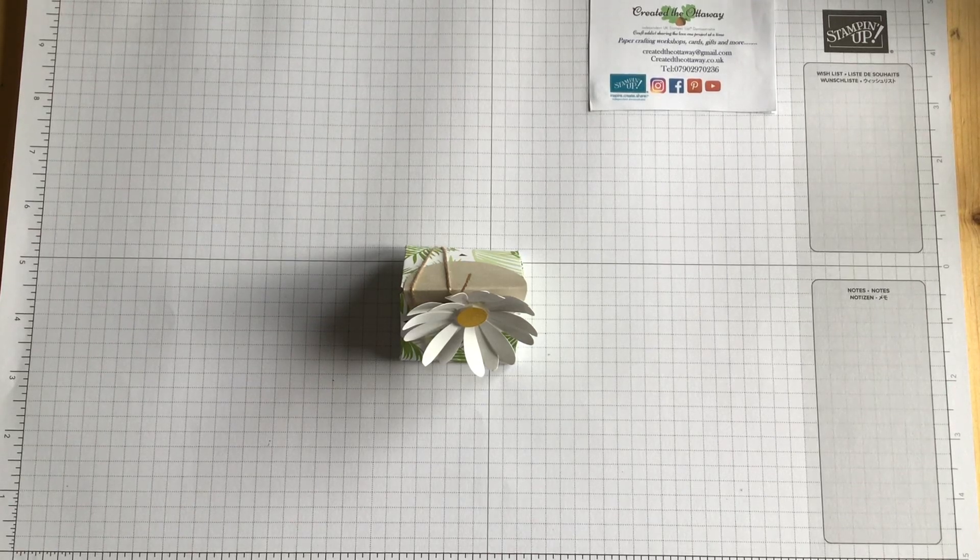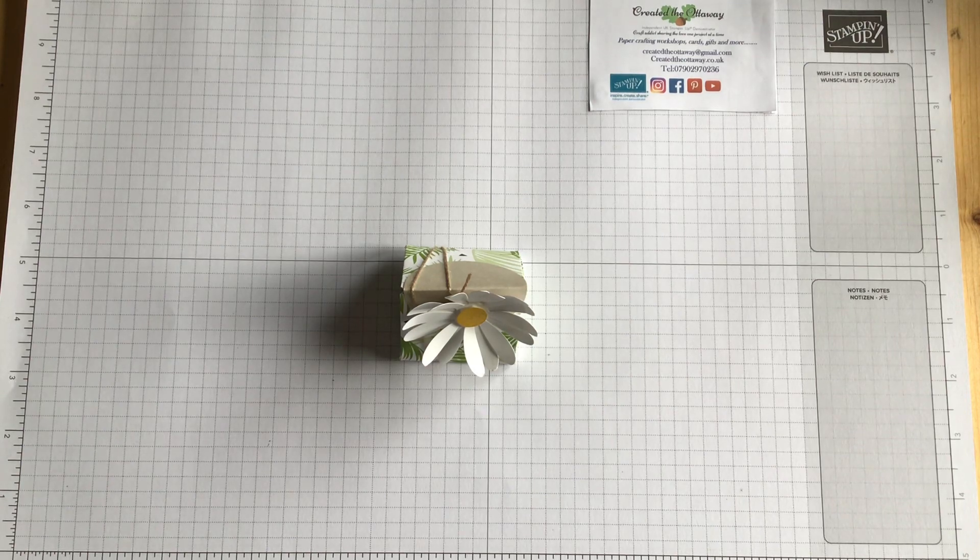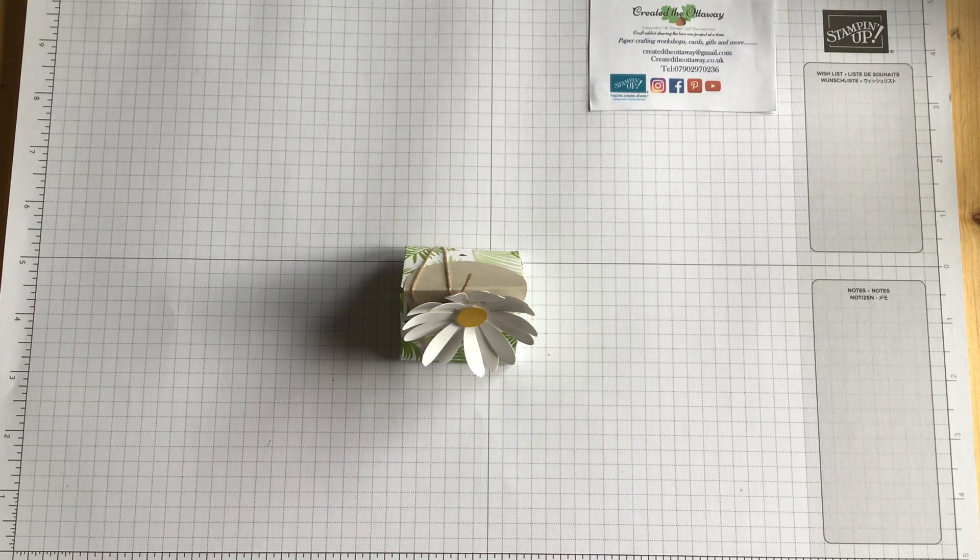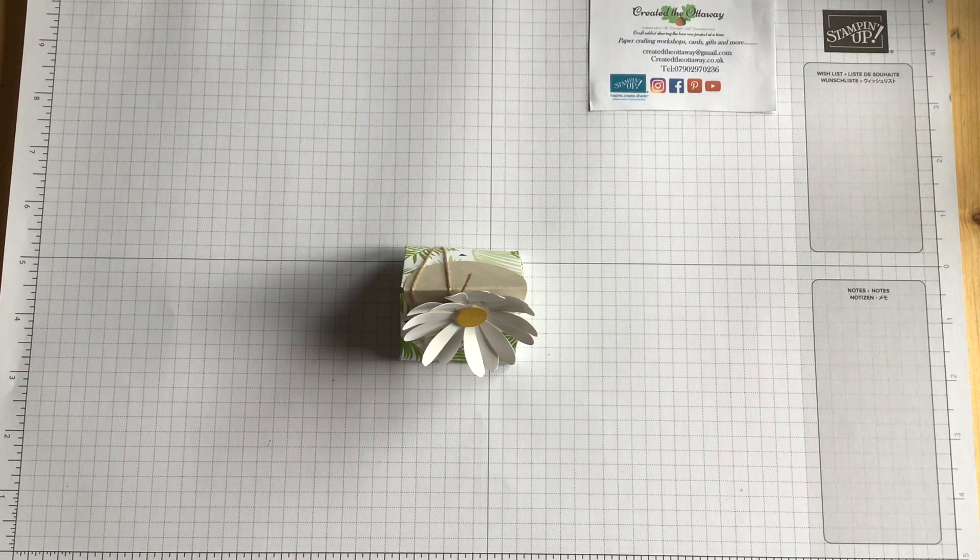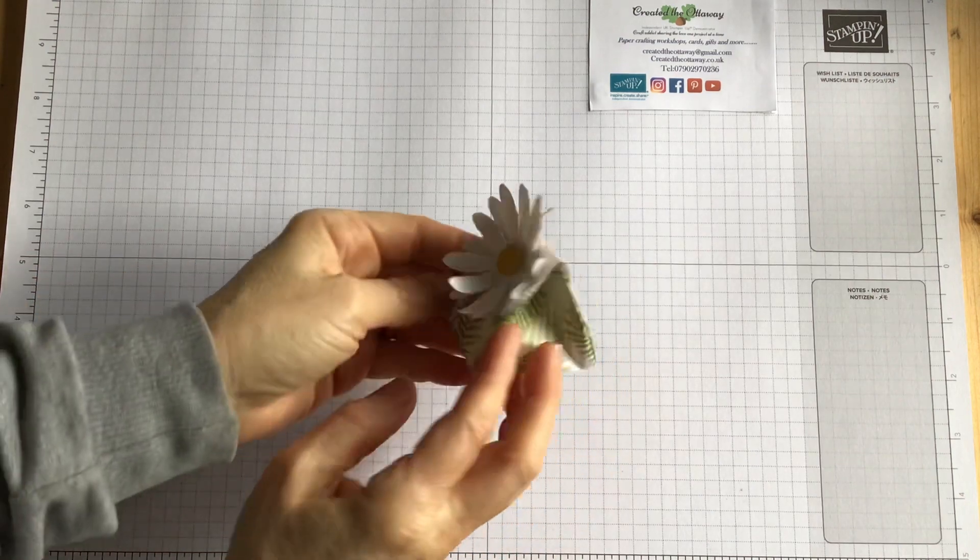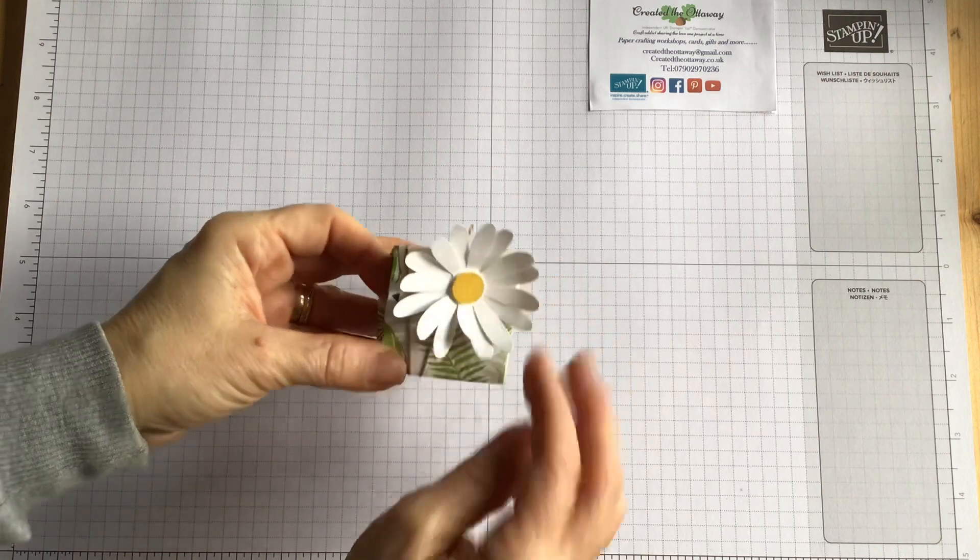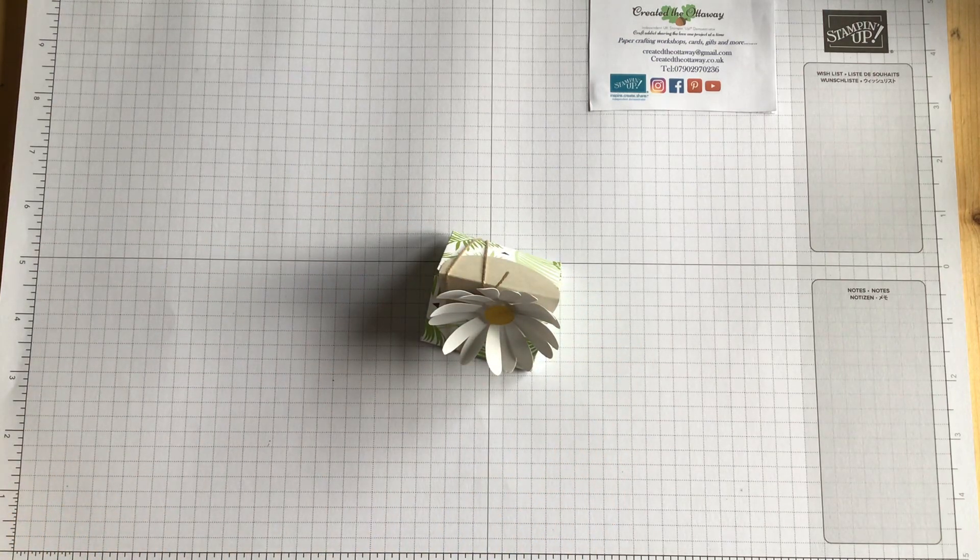Hello, I'm Claire from Created the Ottaway. I'm an independent demonstrator for Stampin' Up in the UK. Thank you for joining me. I've got, well I'm redoing really, a make that I've done before. It's this tiny little box. This one's got a punched large daisy on it, and this time today I'm going to jazz it up a bit and make a Christmas version with Eden's Garden.